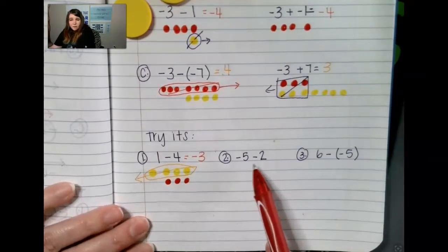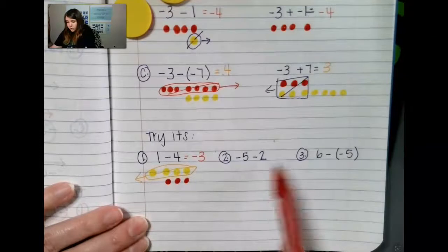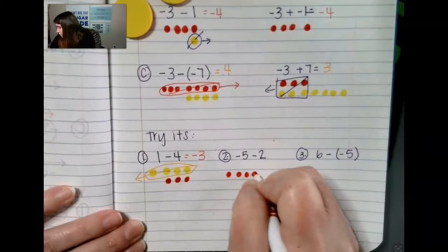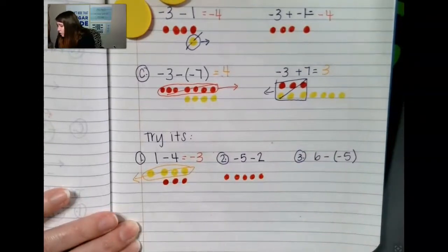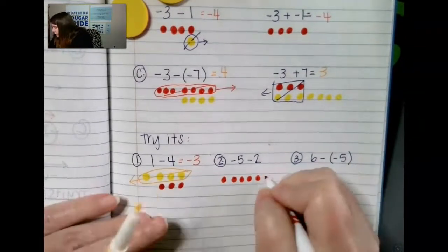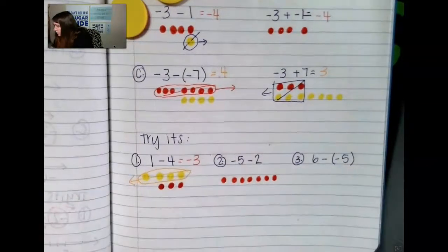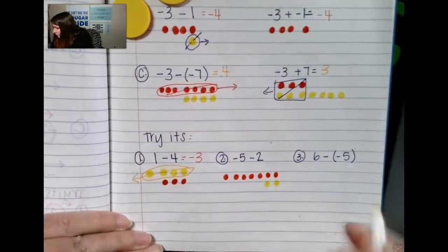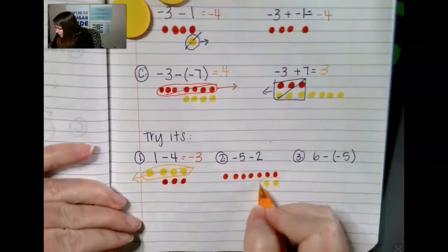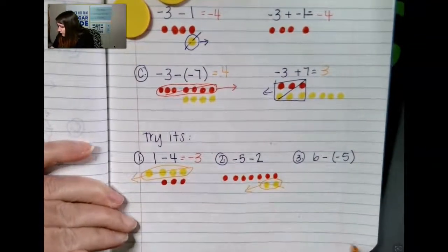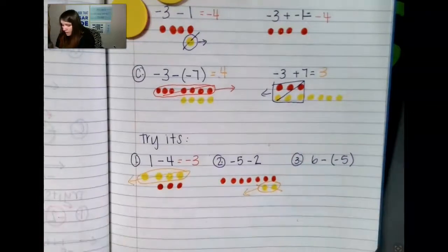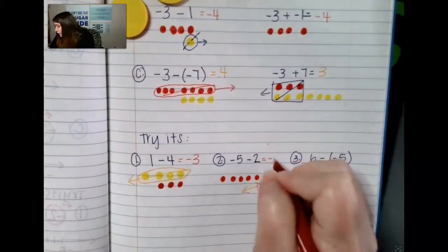I had negative 5 and I need to take away a positive 2. Well, I don't have positive 2 to take away, so I'm going to create the possibility by creating 0 pairs. I have to add on the possibility. Now I can take away positive 2 — those are gone — and I'm left with negative 7.